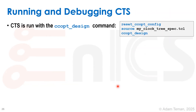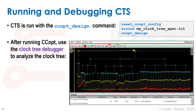Now we're ready to run and debug CTS. We run the ccopt_design command: first reset_ccopt_config to clear any existing ccopt configurations, then source our clock tree spec, and then run ccopt_design. This concurrently builds our clock tree, runs timing, fixes issues, runs timing again, and fixes again — so it's a concurrent clock tree build and timing optimization. That's what ccopt is doing.